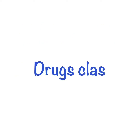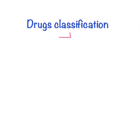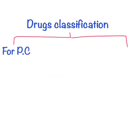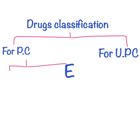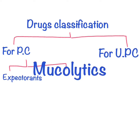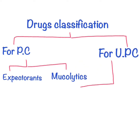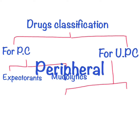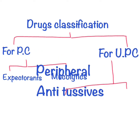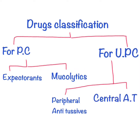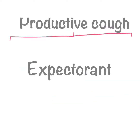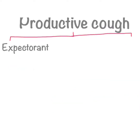Drugs for cough are divided into two categories: drugs used for unproductive cough and drugs used for productive cough. Drugs for productive cough are divided into two further categories: expectorants and mucolytics. Drugs for unproductive cough are divided into two categories: peripheral antitussive drugs and central antitussive drugs.